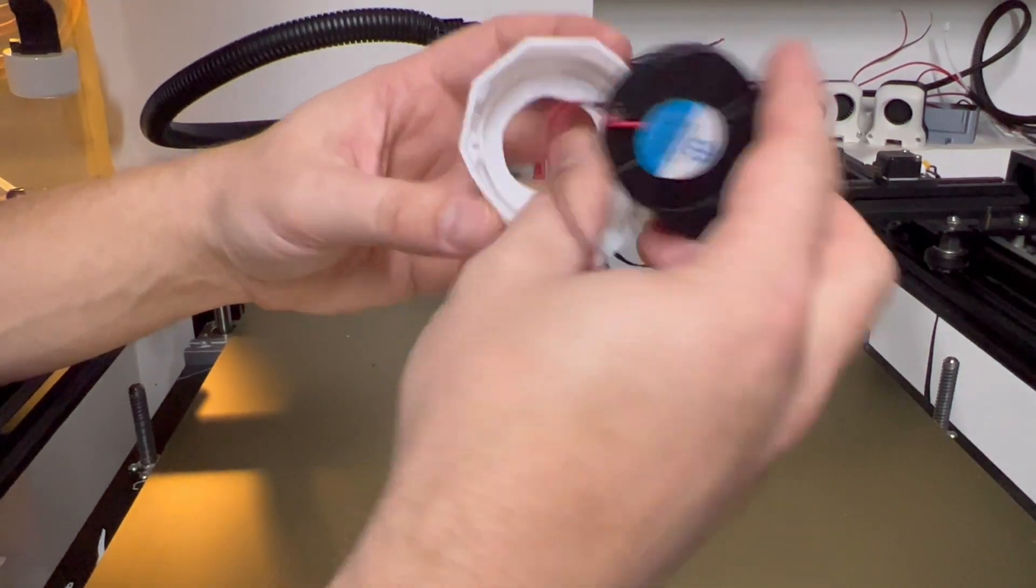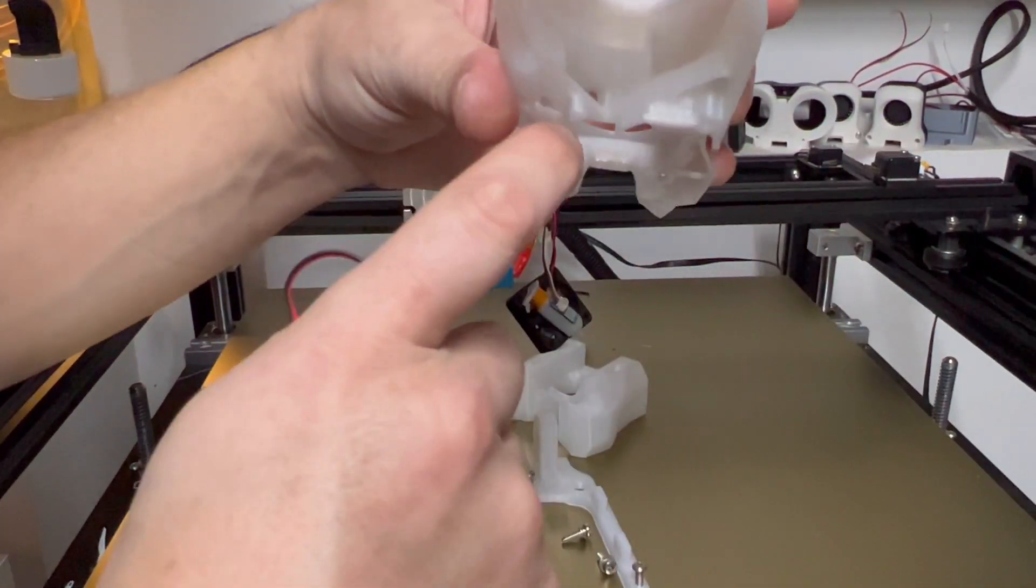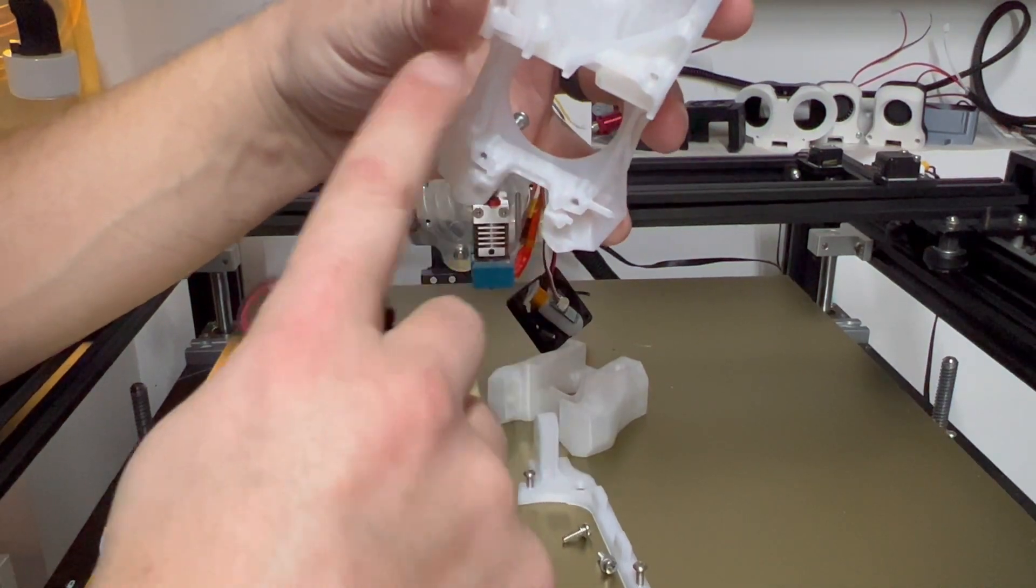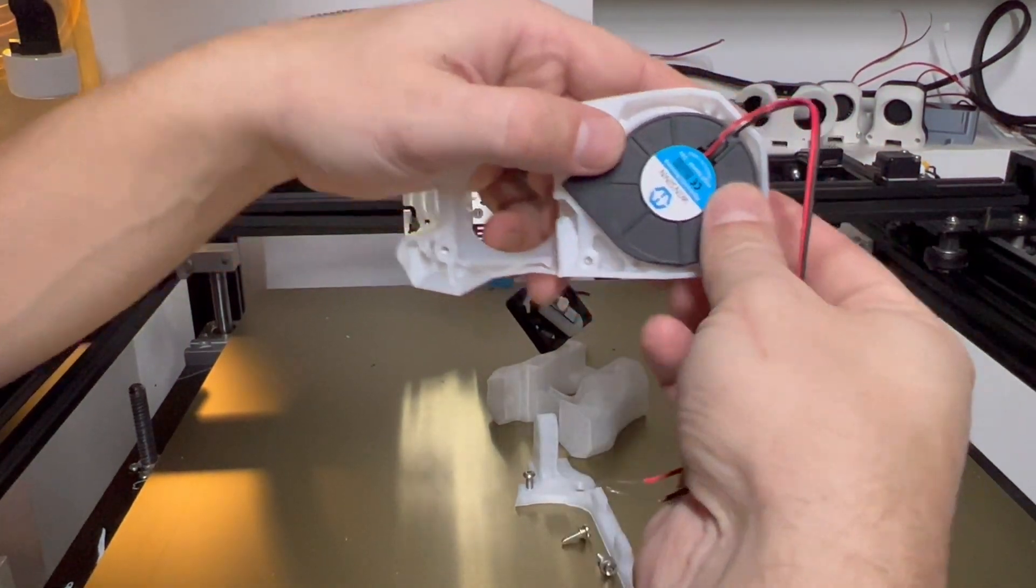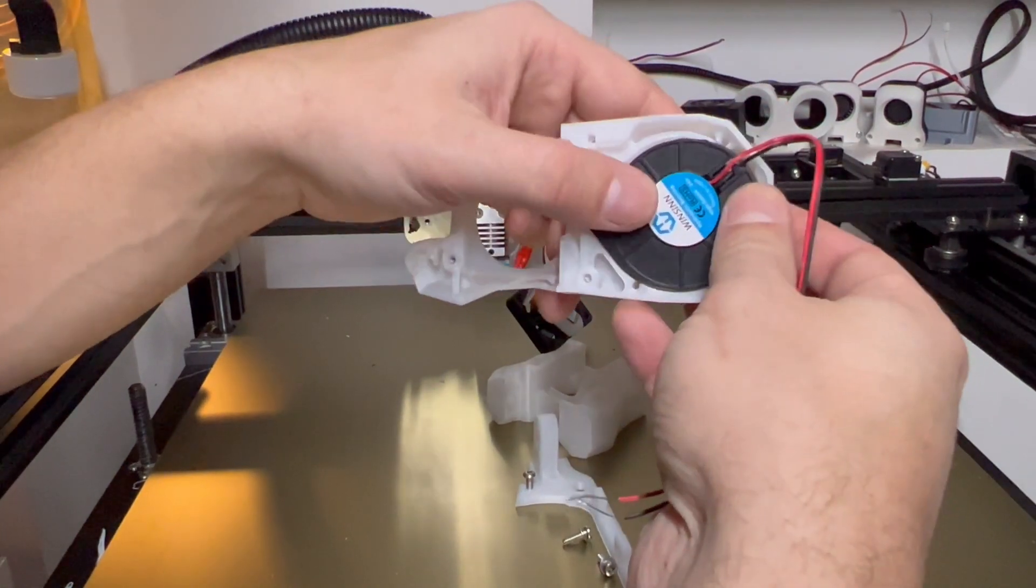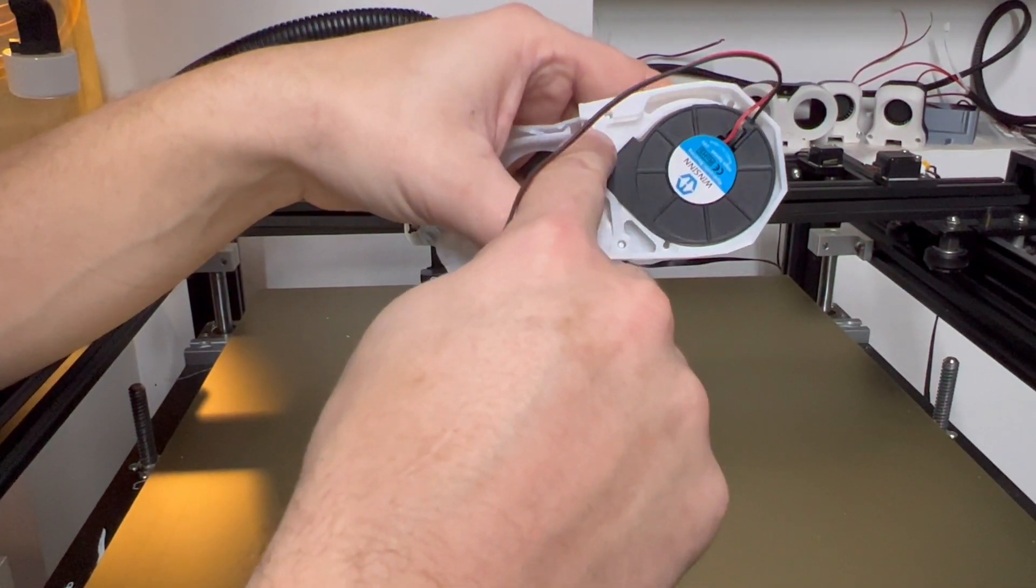That fan fits in the top piece here. As you can see, there's a channel, two channels. There's one channel that goes to each side. And the way the fan fits in, it just kind of fits in right there. It snaps in nicely, and then the wire can run down the side channel here and feed it however you'd like.